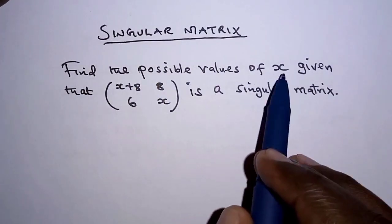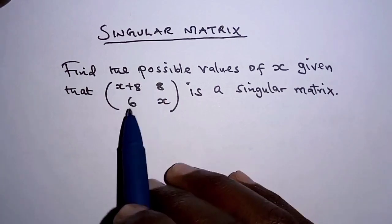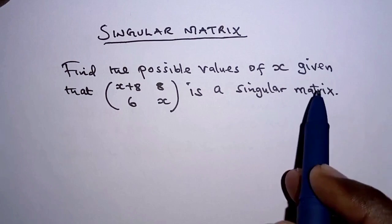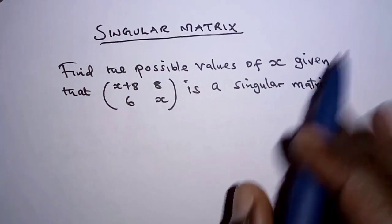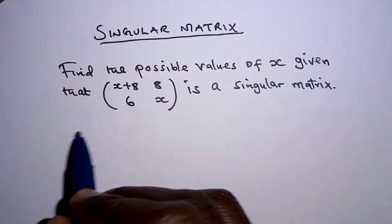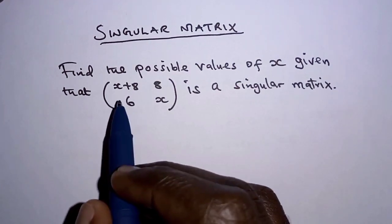Find the possible values of X given that the matrix (X+8, 8; 6, X) is a singular matrix. A singular matrix is a matrix without an inverse, meaning the determinant is 0. From that fact, we are going to form an equation.